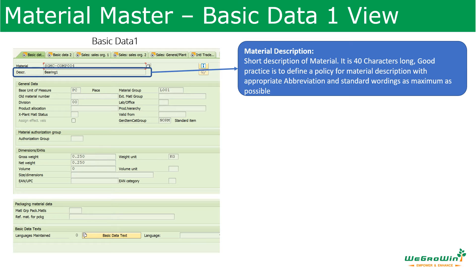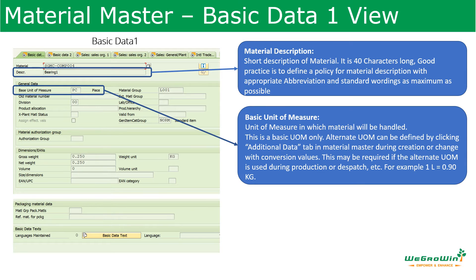Next is the basic unit of measure — this is the unit of measure in which the material will be handled. There are different units of measurement: for purchasing there may be another unit, for production another, and for sales another. All these can be defined in the additional data view. From the basic data screen, clicking the Additional Data button allows you to define alternate units of measure.